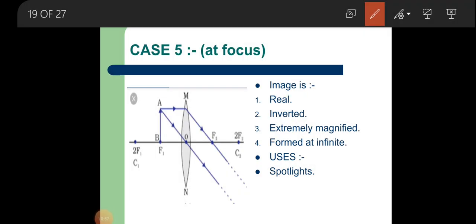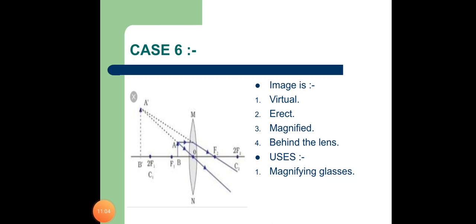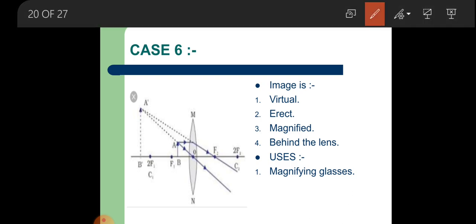The use of this situation is in spotlights. Case 6: object placed between the optical center and the principal focus. One ray goes parallel to the principal axis and one from the optical center. These rays are divergent in nature — they are going away from each other.